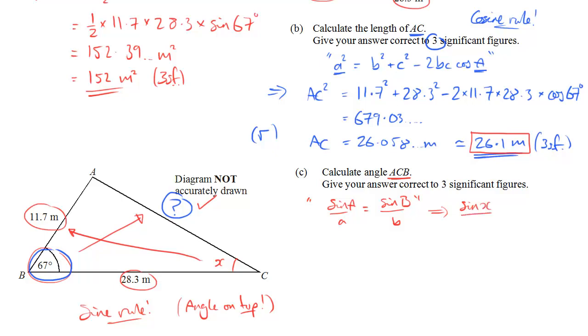In this case, sine X divided by the side opposite it, 11.7, will be equal to sine 67 divided by the length opposite that, 26.1. But let's actually just use the value that's still in our calculators. Let's use the exact value, 26.058 and so on. That will give me all the accuracy I need for part C.